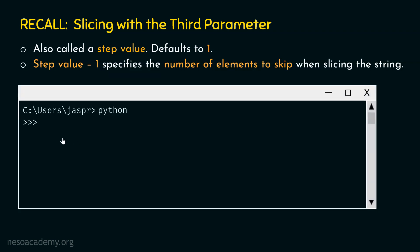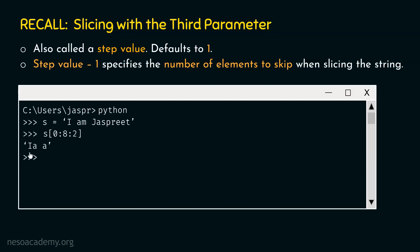For example, if we go to our command prompt and type this command: s equal to 'I am just breathe' and hit enter, we will not get any error message. Now, let's say we type s[0:8:2]. If we hit enter, we will get this string with four characters: i, a, white space, and then a.